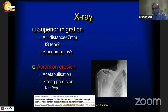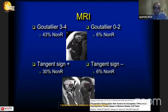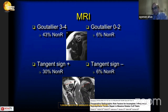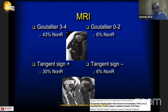Looking at MRI, in Goutallier grade 3 and 4, 43 percent of tears are non-repairable, but this ratio decreases to just 6 percent with Goutallier grade 0, 1, or 2. The tangent sign is another important MRI finding — a positive tangent sign is associated with 30 percent non-repairable tears, decreasing to 6 percent when the tangent sign is negative.